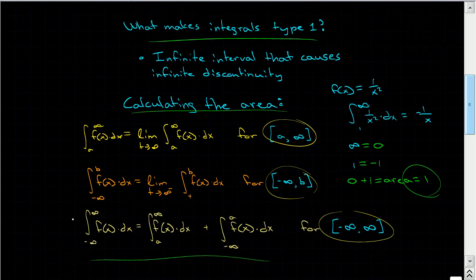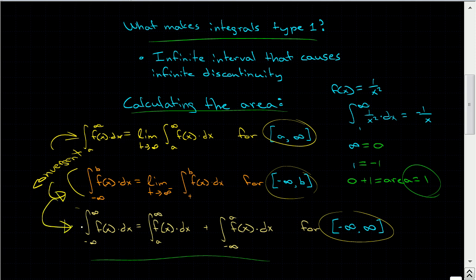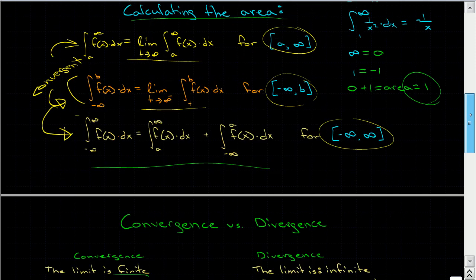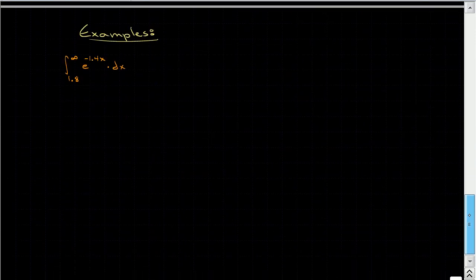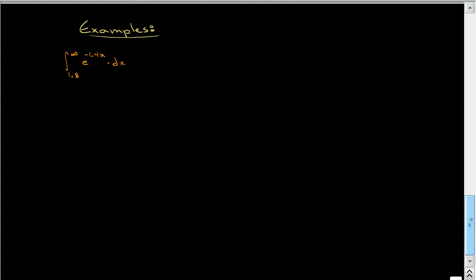If the integral from negative infinity to b is convergent and the integral from a to infinity is convergent, then we can say that going from negative infinity to infinity is just the sum of these two limits. Let's go over an example: the function e to the power of negative 1.4x, going from 1.8 to infinity.